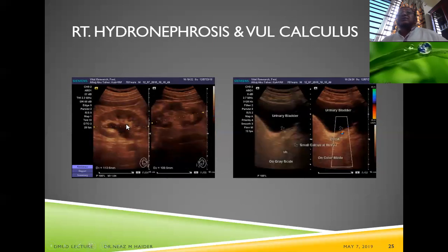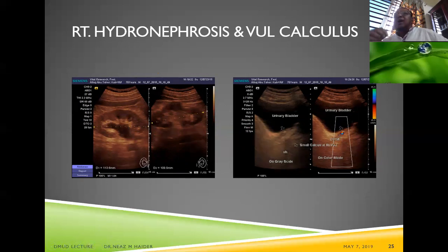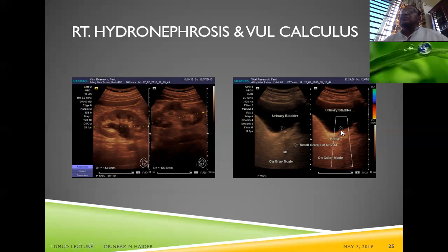When mild hydronephrosis is found in the right kidney with a small calculus in the right ureter, we should carefully look at the ipsilateral vesicoureteric junction. This is the VUJ calculus — when renal sinus splaying or mild hydronephrosis is detected, the corresponding VUJ should be carefully examined.